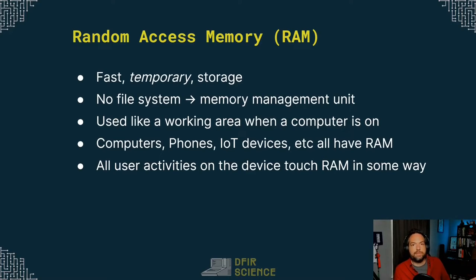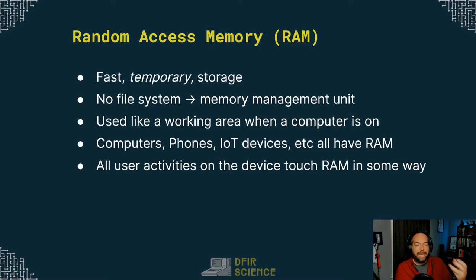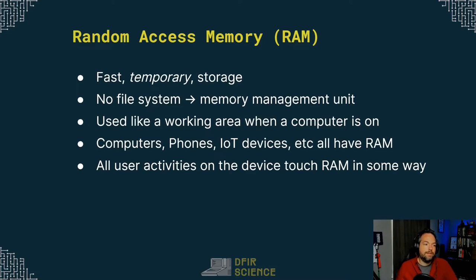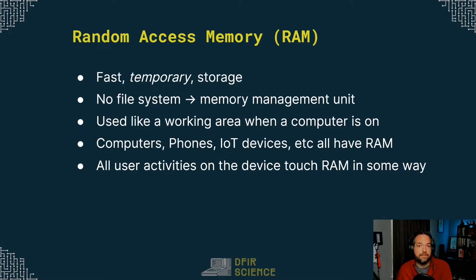Most of what we do in forensics is disk or hard drive forensics, but a lot of user activities will only ever be in RAM — never on the hard drive. So if we want a complete picture of what a user has been doing, we need to get a copy of RAM along with the hard drive to build up the entire story. They go together. All user activities touch RAM in some way, and that's why it's so important to collect RAM and use it in your digital investigations.